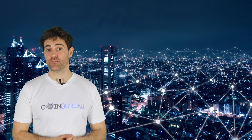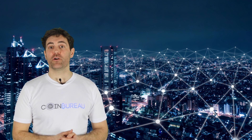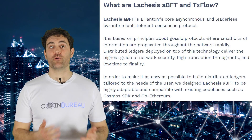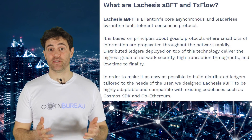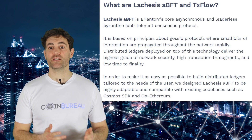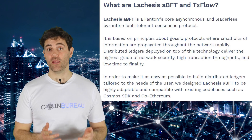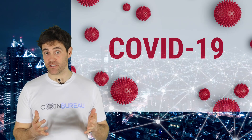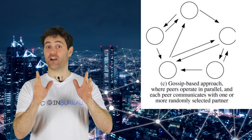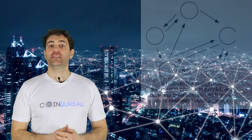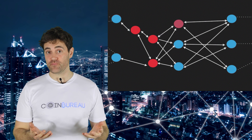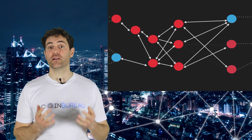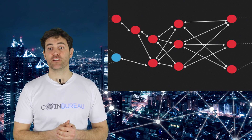Now, what about the Fantom consensus protocol? Fantom's core consensus protocol is an asynchronous Byzantine fault-tolerant algorithm, also known as ABFT — specifically their Lachesis ABFT. This algorithm is based on a gossip protocol. You can basically think of it as a virus — a good type. Data propagates through the system node by node, like a virus, eventually reaching every node in the Fantom network. It's a very effective way to build a global map of the network from limited local interactions with nearby nodes.